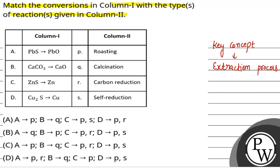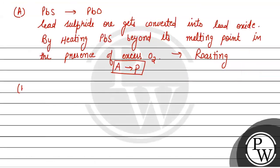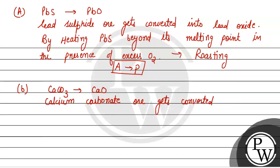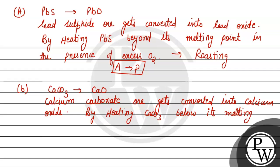Next, अगर हम बात करें part B की, तो calcium carbonate gets converted into calcium oxide. इसमें जो carbonate ore है, वो oxide में convert हो रहा है.